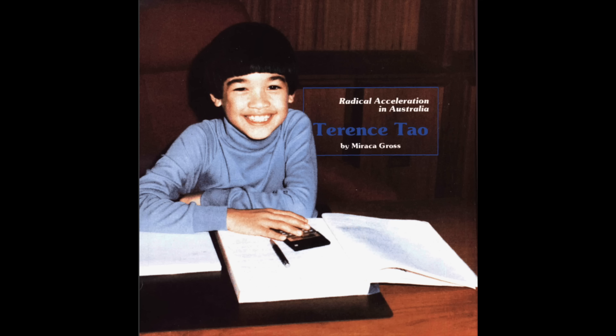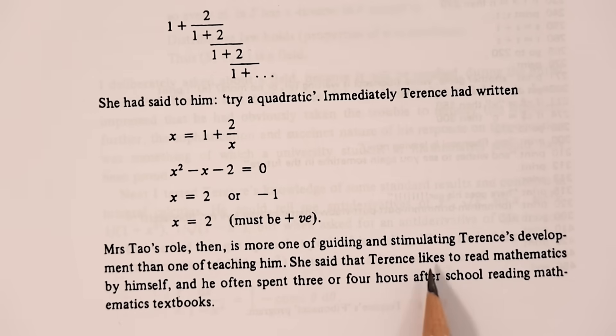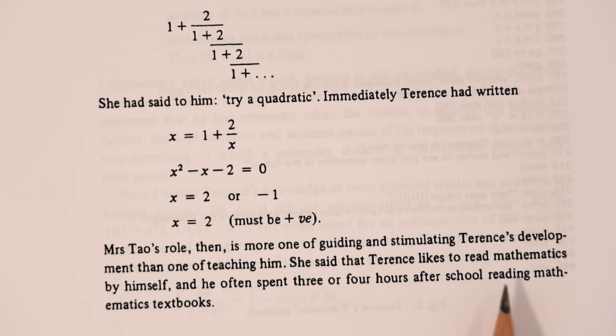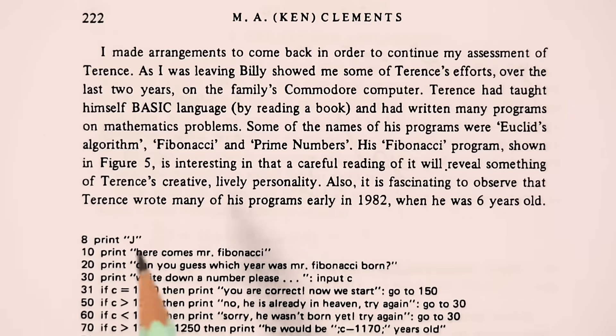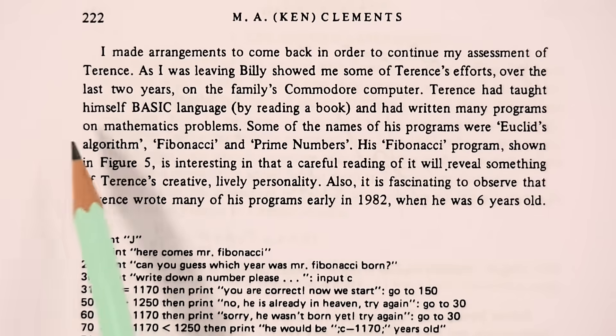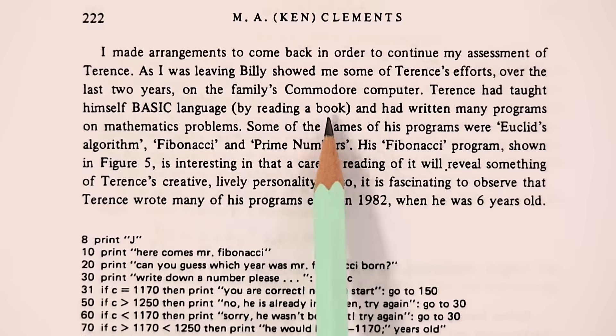Terence's dad was a doctor and Terence's mum was a graduate of physics and maths, who had worked as a high school teacher. She said that Terence liked to read mathematics by himself, and often spent three or four hours after school reading mathematics textbooks. Terence also had an interest in computer programming, and had taught himself basic language by reading a book.